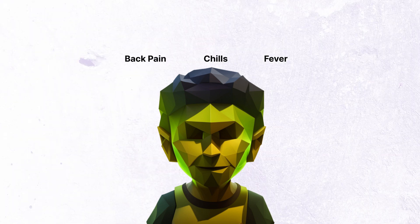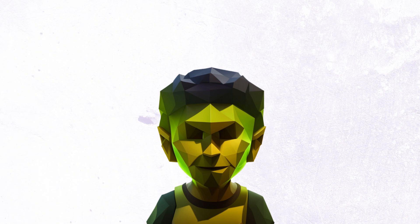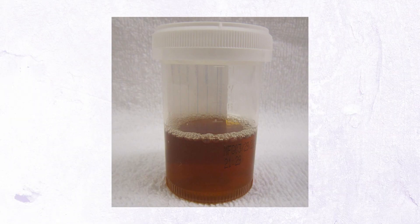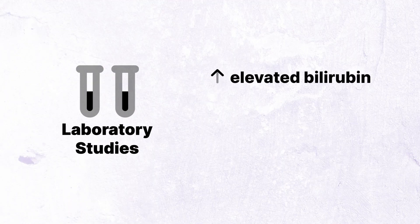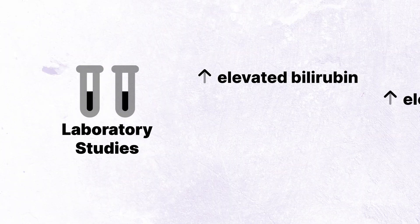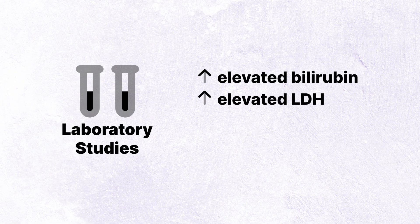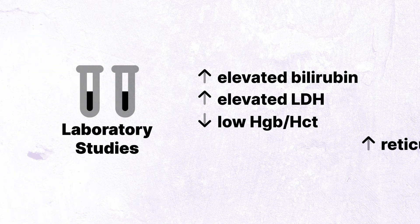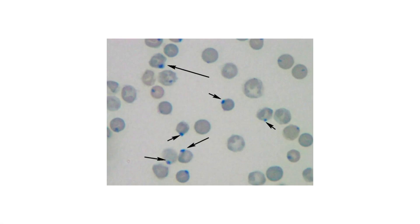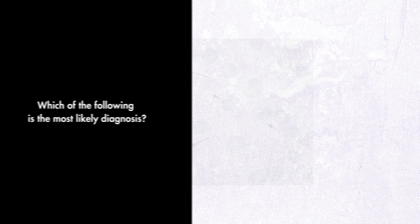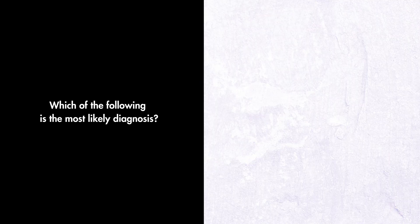He provides a urine sample, which is seen here. Initial laboratory tests show an elevated bilirubin, elevated lactate dehydrogenase, anemia, reticulocytosis, and Heinz bodies on a peripheral smear. Which of the following is the most likely diagnosis?